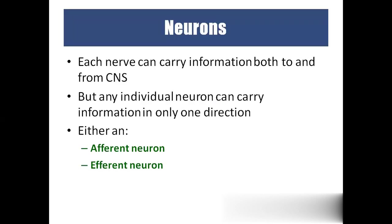Nerves carry information to and from the brain, but each individual neuron carries information in only one direction. There are two types: afferent neurons carry information towards the brain — these are sensory neurons. Efferent neurons carry information away from the brain — these are motor neurons.